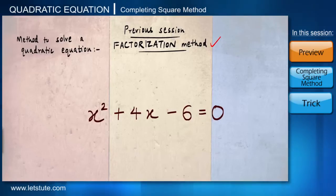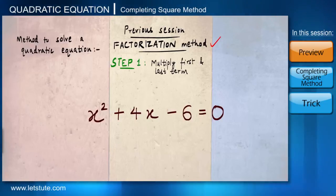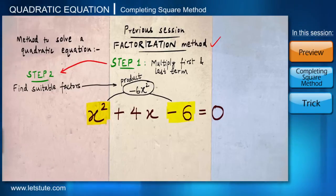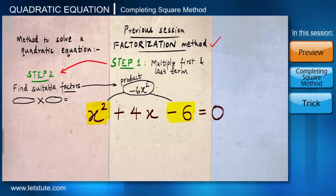We know all the rules we have to follow under this method. Step 1 is to multiply the first term of the equation with the third term. So we will multiply x² with -6 and the product which we will get is -6x². Step 2 is to find the suitable factors for this particular product. They are the numbers which are multiplied to give us another number. So we will find factors for -6x².